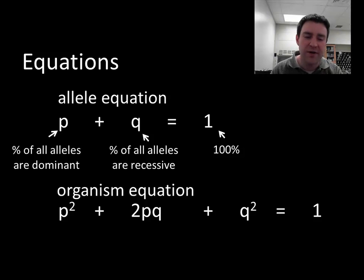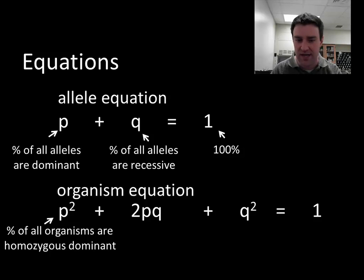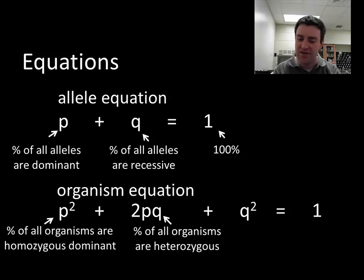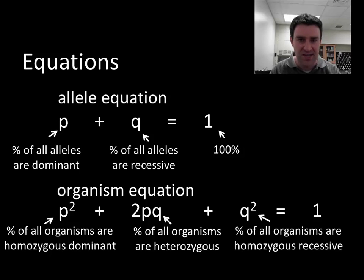Okay, so we can also apply this to organisms in the population. If an organism is P squared, that organism has two dominant alleles. That represents what percent of all the organisms are homozygous dominant in genotype. P and Q means that you have one of each allele, dominant and recessive. So that whole term represents the percent of organisms that are heterozygous. The entire term 2PQ represents the percent of heterozygous organisms, and Q squared represents the percent of homozygous recessive organisms.